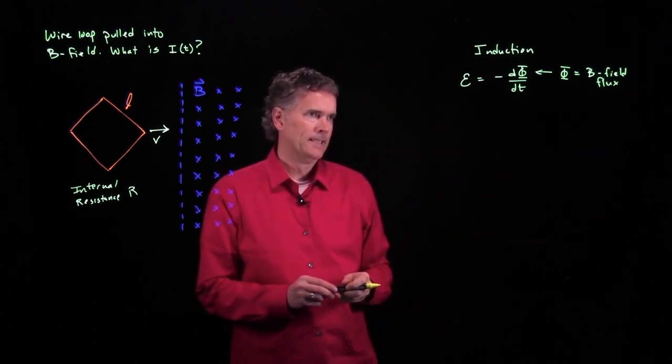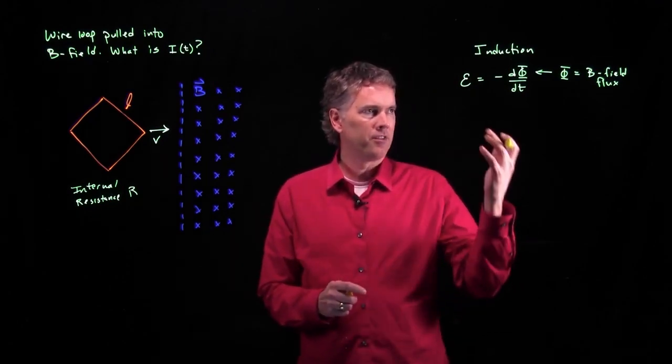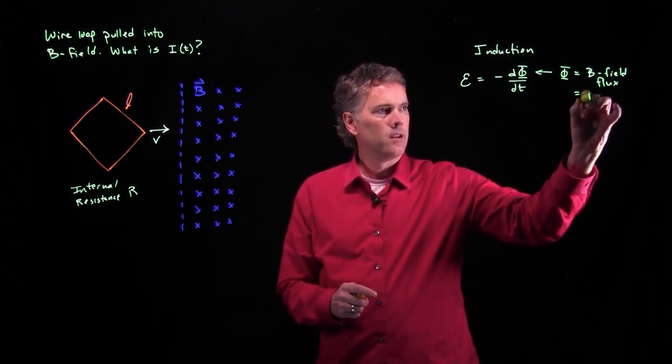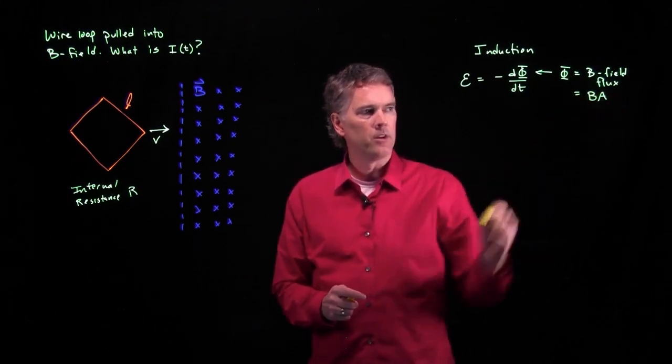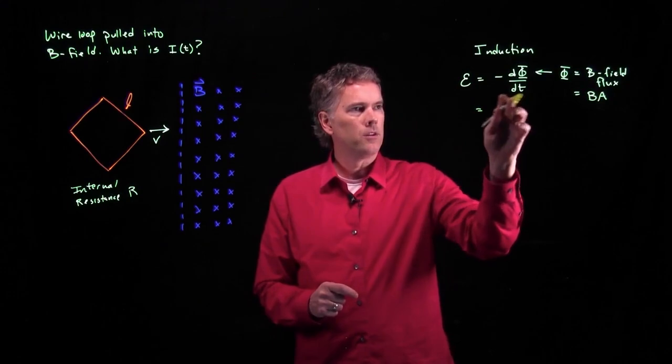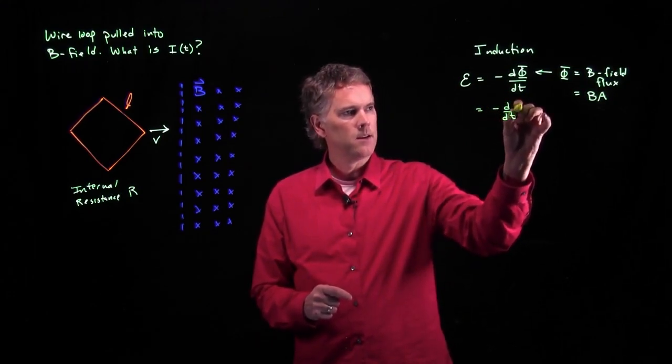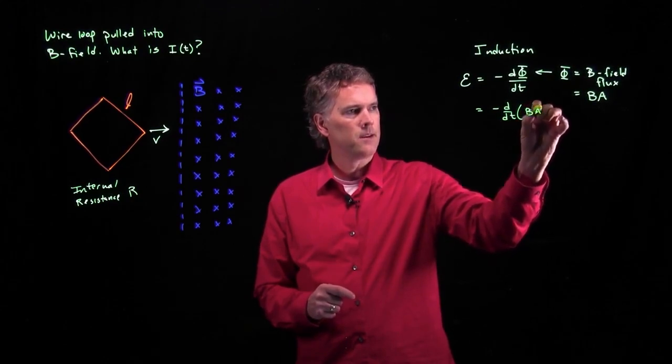B field flux is just simply the strength of the B field times the area. So if we put that into this equation, what do we get? We get negative d/dt of B times A.